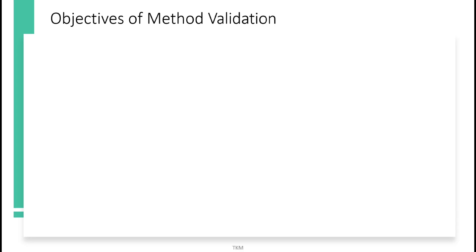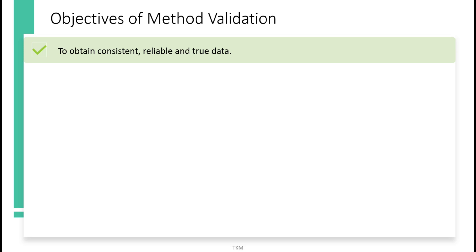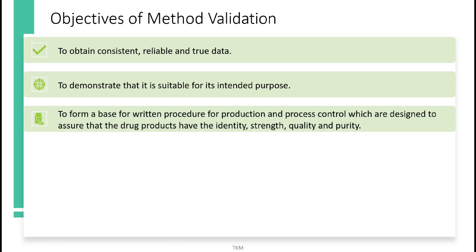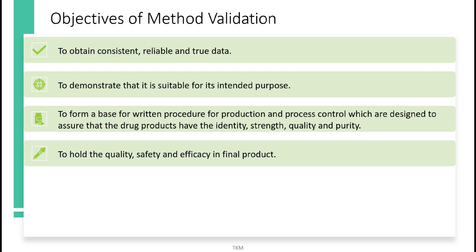The objectives behind method validation are: to obtain consistent, reliable, and accurate results through data; to demonstrate it is suitable for its intended purpose; to form a base for written procedures for production and process control, designed to assure that drug products have identity, strength, quality, and purity; and to hold quality, safety, and efficacy in the final product.